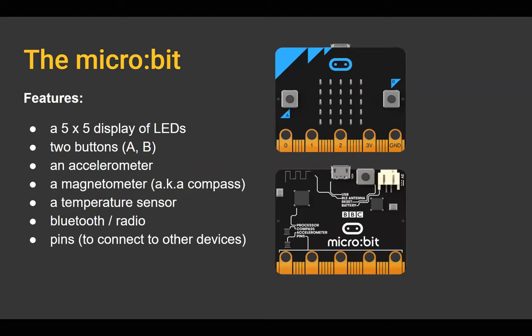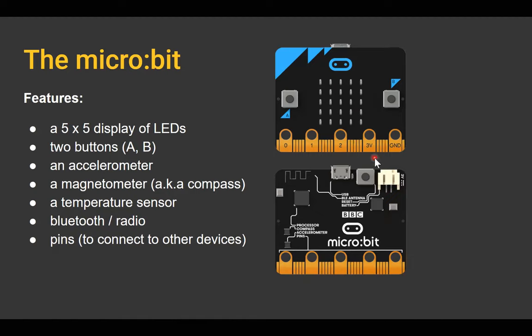It also has a temperature sensor, which works on one-degree variations — it'll know the difference between 29 and 30 degrees but not between 29.5 and 30. We recommend using it to measure decent variations over time, such as the temperature across a whole day. There's Bluetooth and radio, which we'll be using today, and pins — zero, one, two, three — plus a ground wire. You can connect to other devices or make toys out of aluminium foil and attach them to the pins.